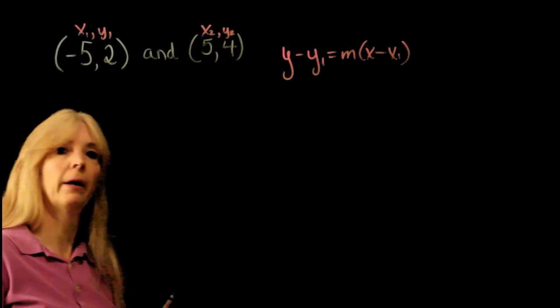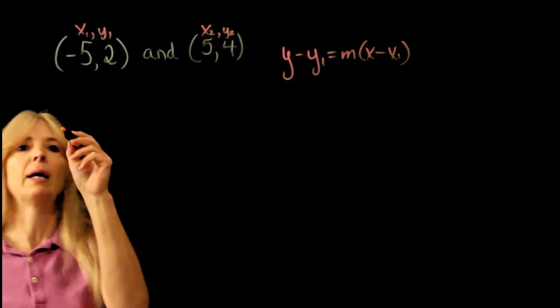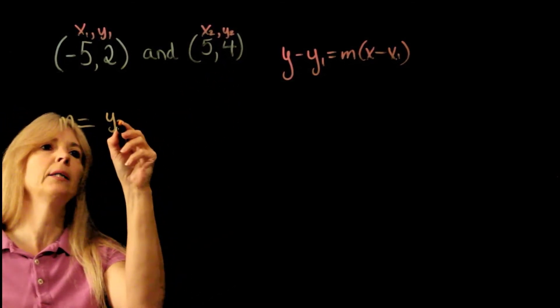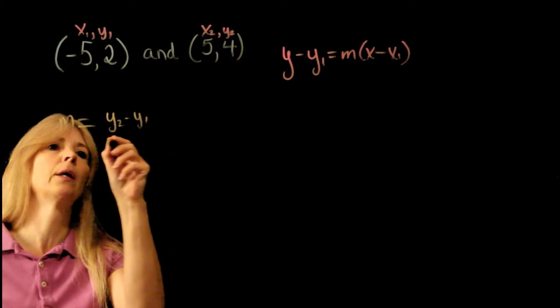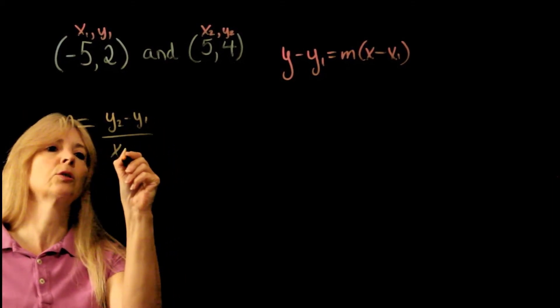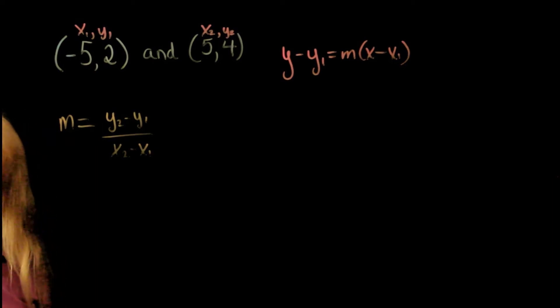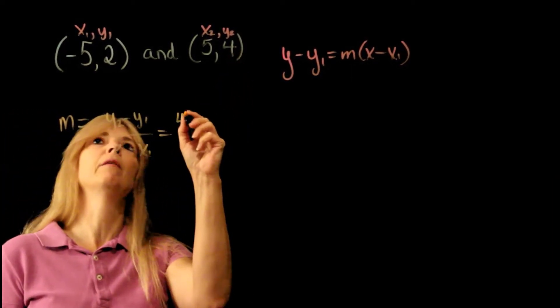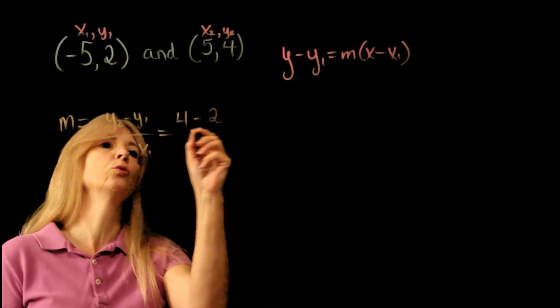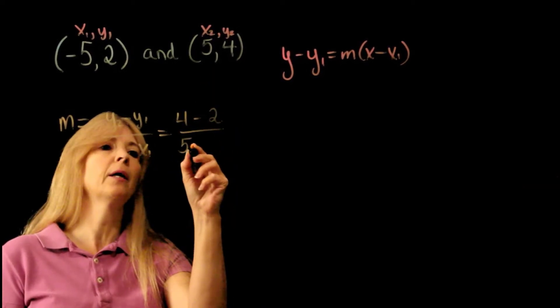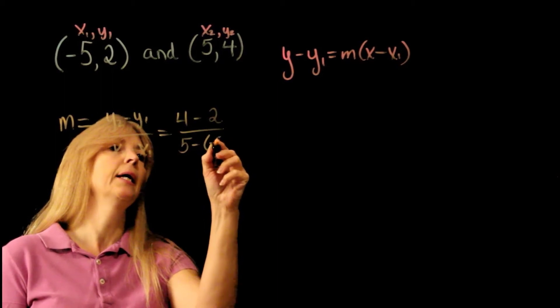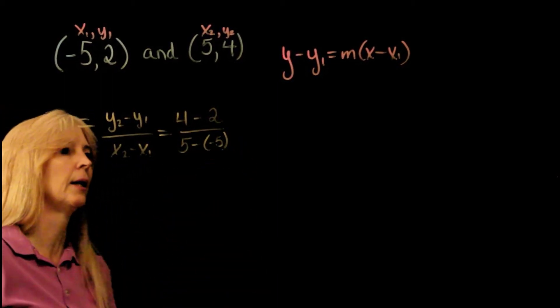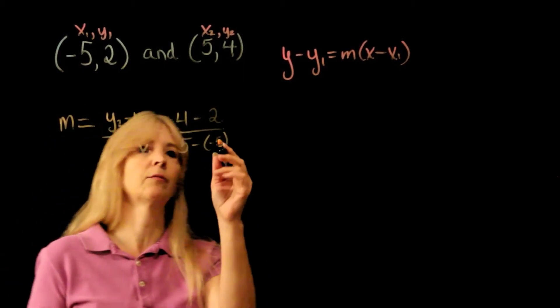No problem, I know how to find the slope. I take the difference in the y's: y2 minus y1 over x2 minus x1. I just plug in those values, so that would be 4 minus 2 over 5, and be careful, minus a negative 5. A negative and a negative is positive.